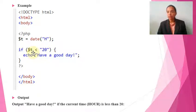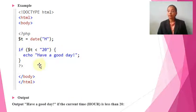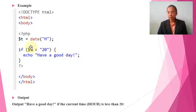For example, if the current time is 16 — meaning it is 4 PM — then since 16 is less than 20, the message 'Have a good day' will be displayed. But if the time is 22, meaning it is 10 PM, then 22 is not less than 20, so no message will be printed. Currently it is 4 o'clock, so 16 is less than 20 and the message 'Have a good day' will appear. Then the body tag and HTML tag close.